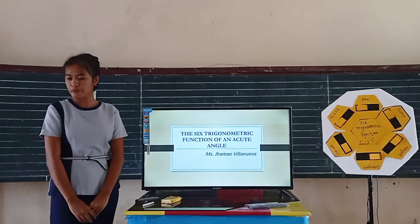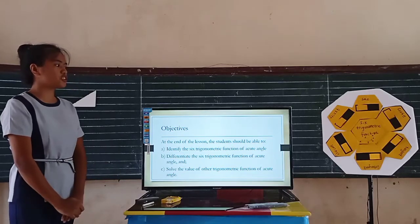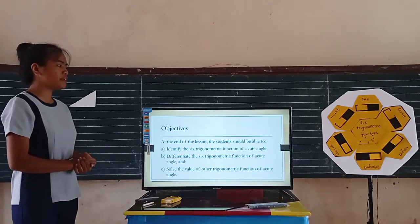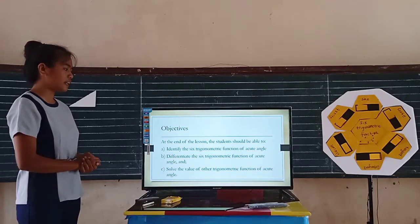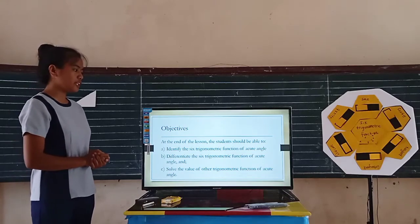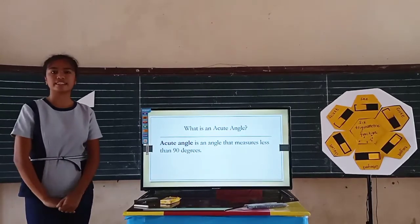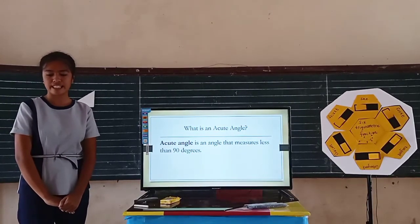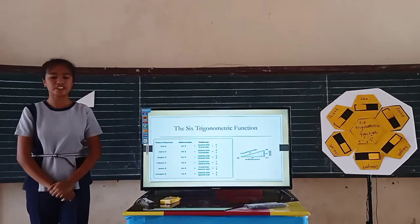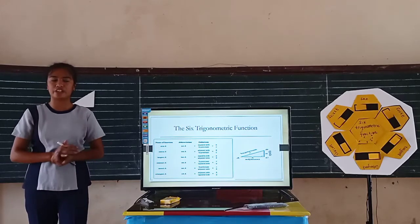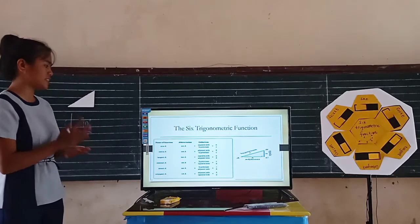Before we proceed to our topic, let me first discuss our learning objectives. At the end of the lesson, the students shall be able to identify the six trigonometric functions of an acute angle and differentiate the six trigonometric functions of an acute angle. An acute angle is an angle that measures less than 90 degrees. The six trigonometric functions are: sine, cosine, tangent, cosecant, secant, and cotangent.